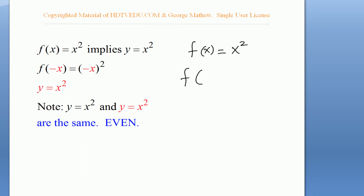When we replace x with negative x, the negative x goes inside the parenthesis. Because of that, the square of negative x will always be positive, so the output is going to be the same — that is the same as x to the power of two. When we replace x with negative x, the y value will always be the same.